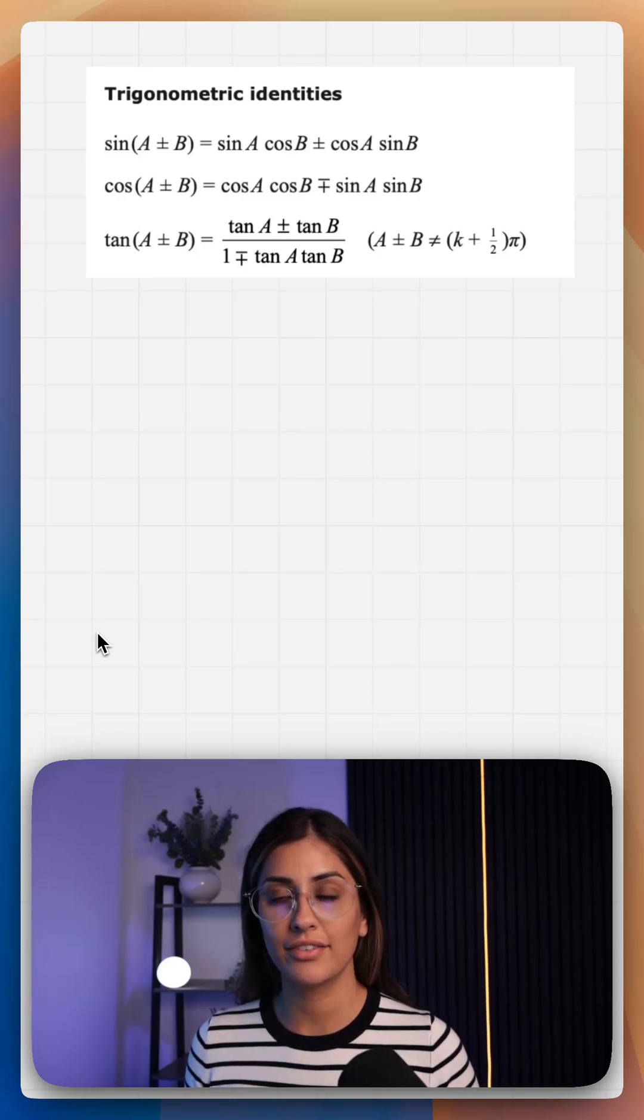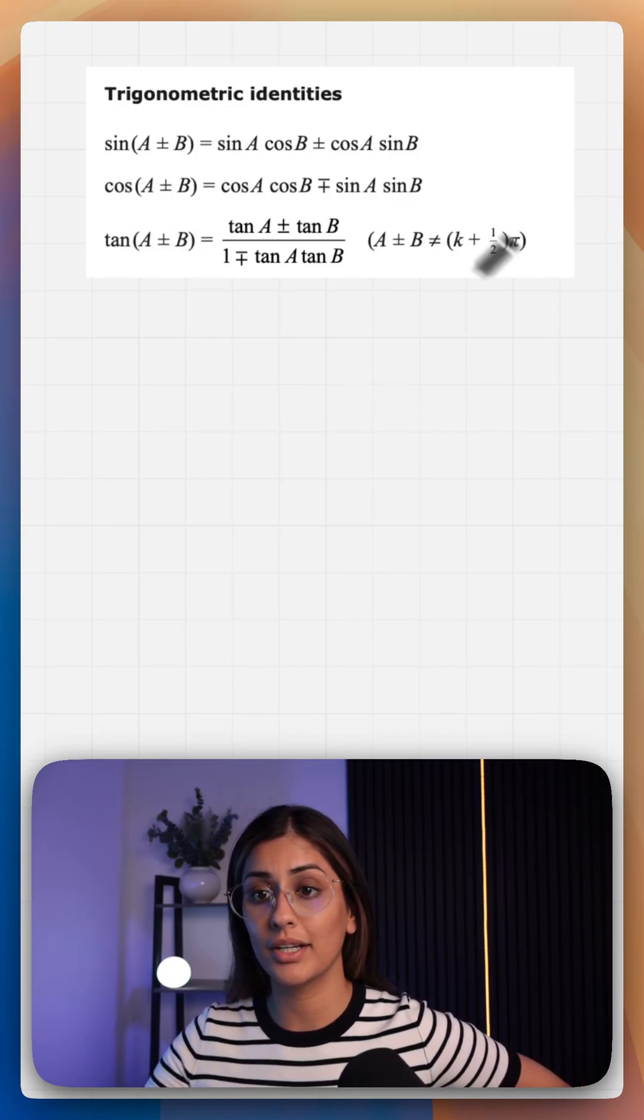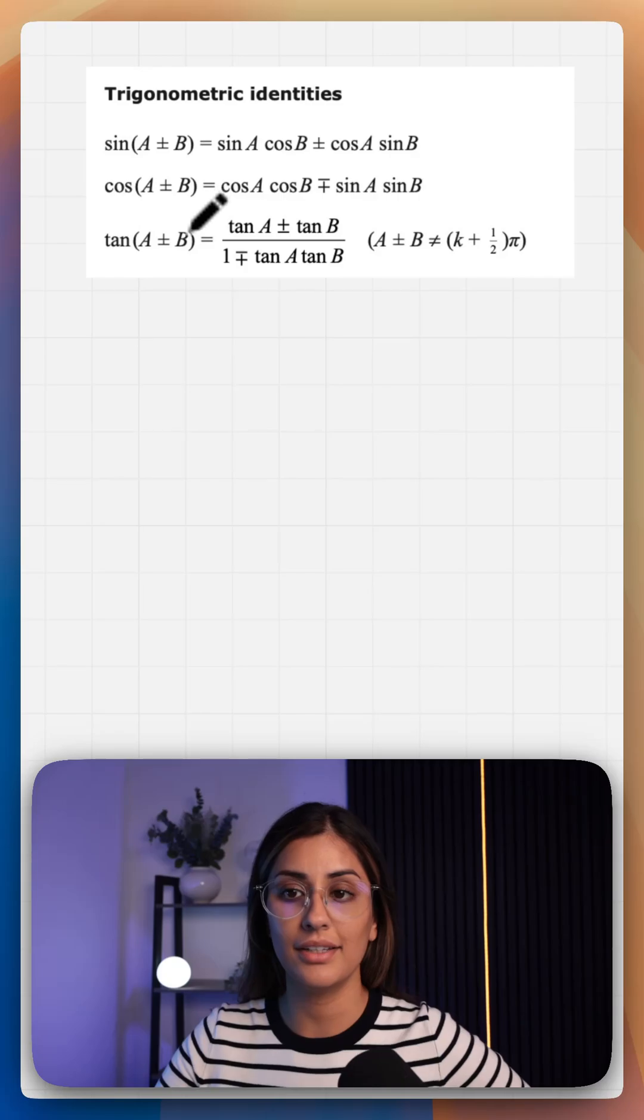I'm going to show you how to derive your double angle formulas that you need in trigonometry. These are your addition formulas in your formula booklet. To derive the double angles, we want to replace our b's in each case with a.